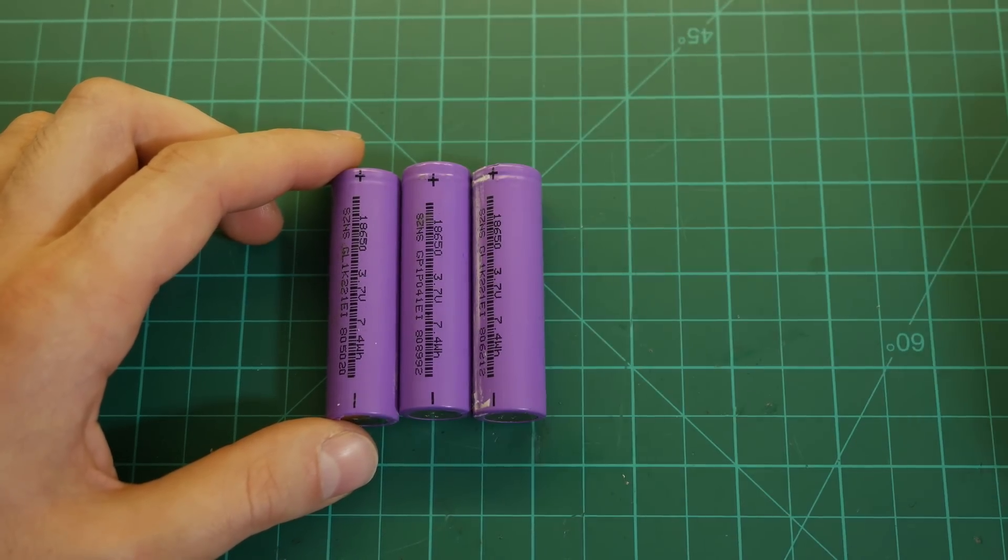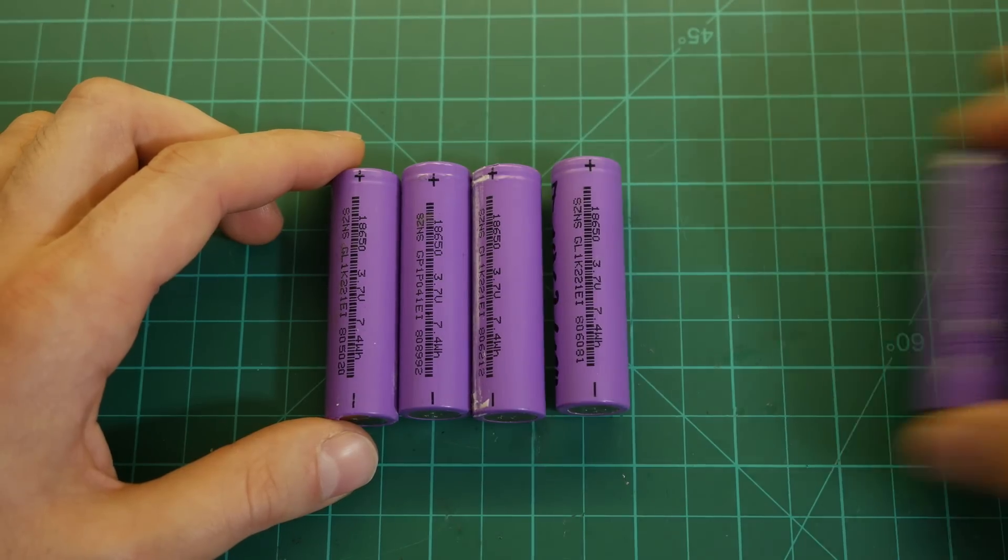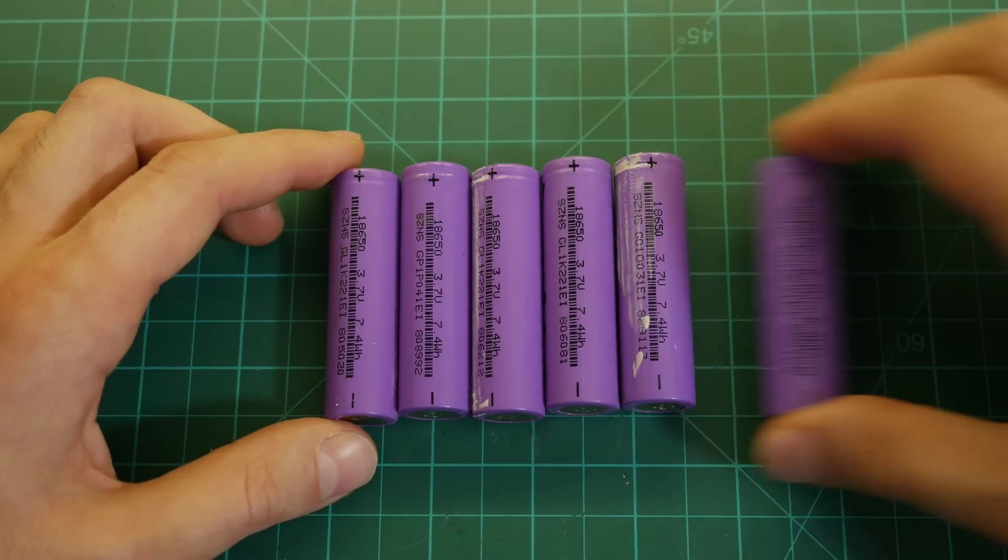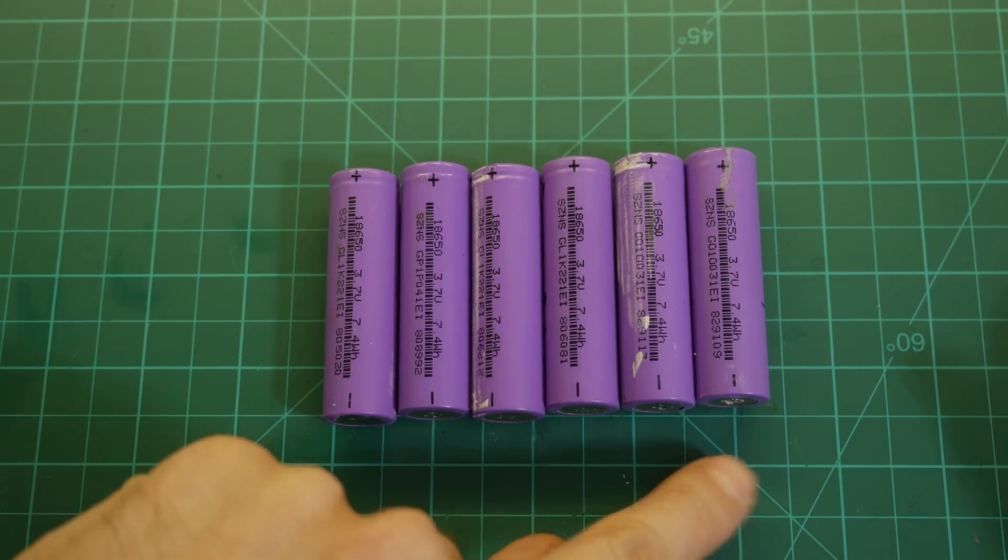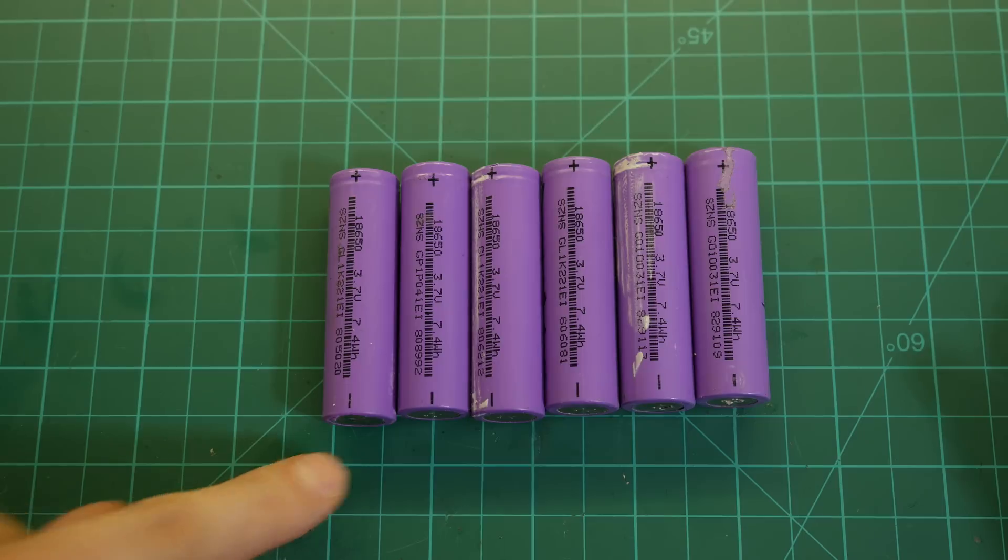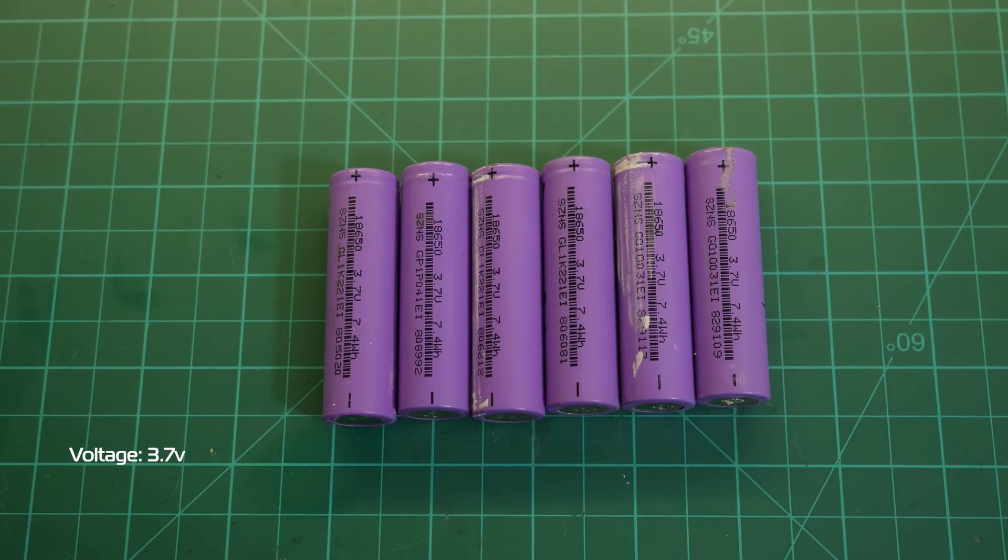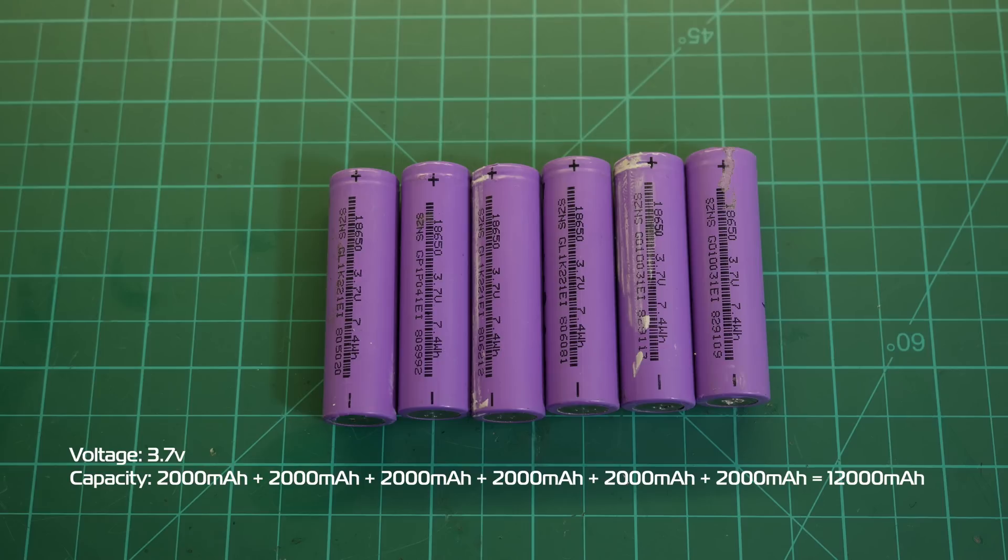The 6P part means that each battery cell will have 6 individual cells connected in parallel which means that all of their plus sides will be connected together and all of their minus sides will also be connected together. This will not increase the voltage of this cell but the capacity. It will make all 6 cells act as one bigger cell.